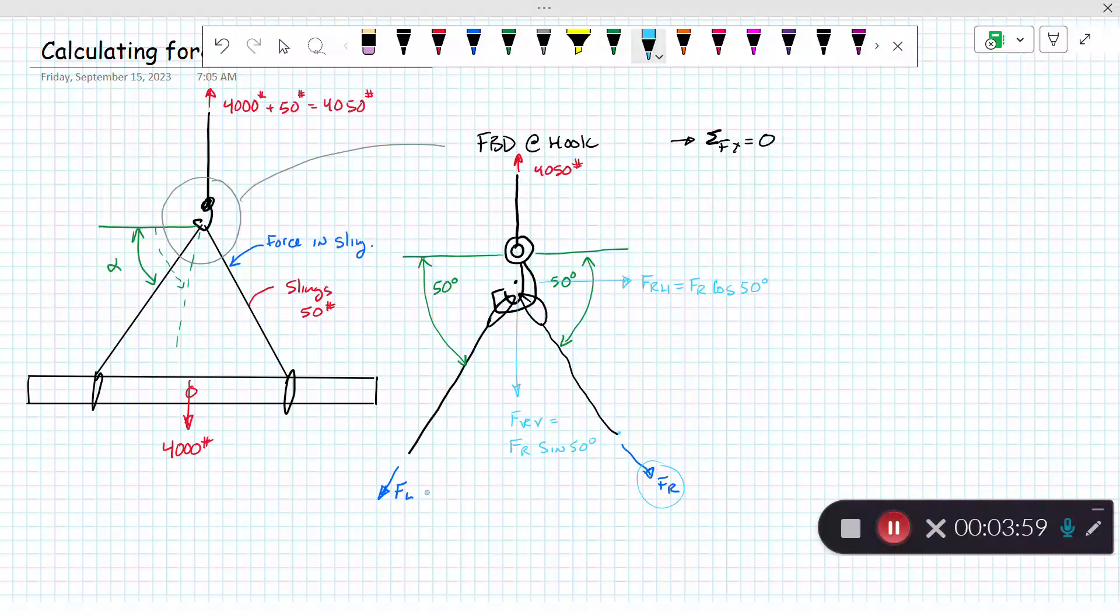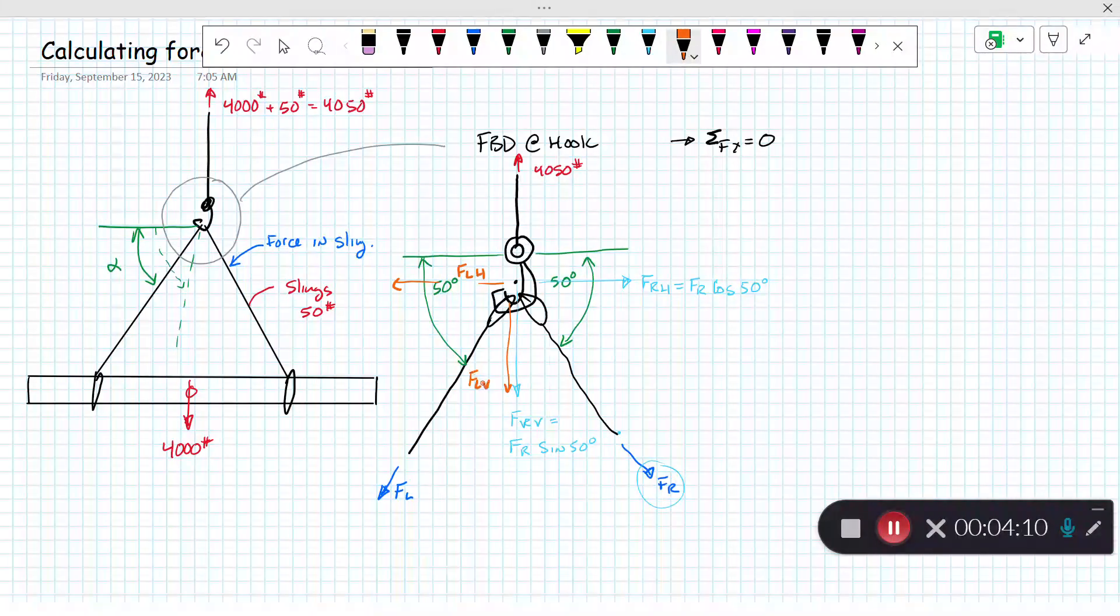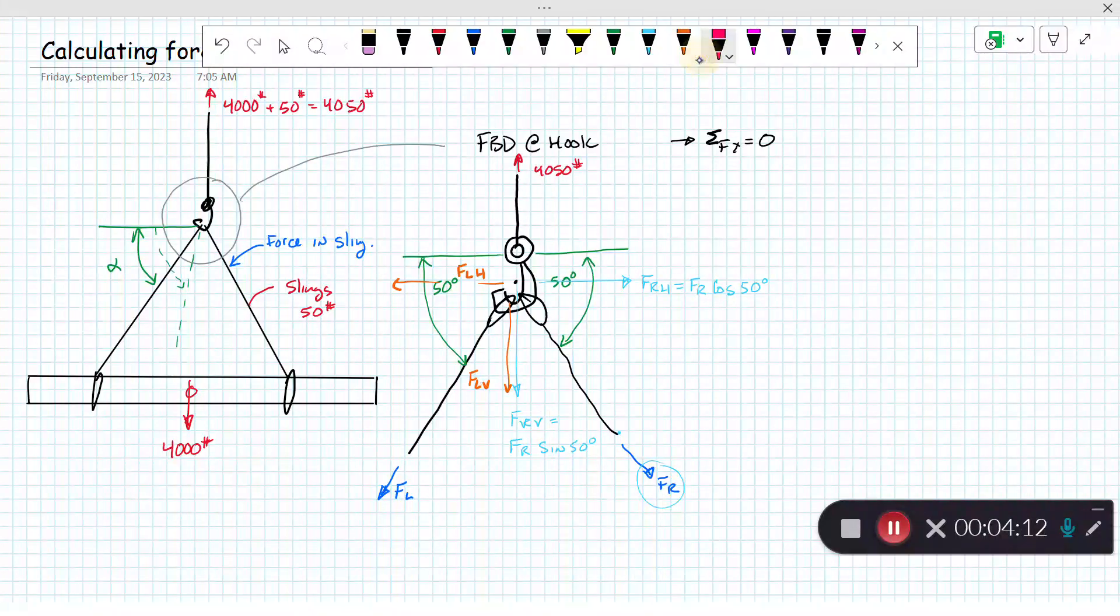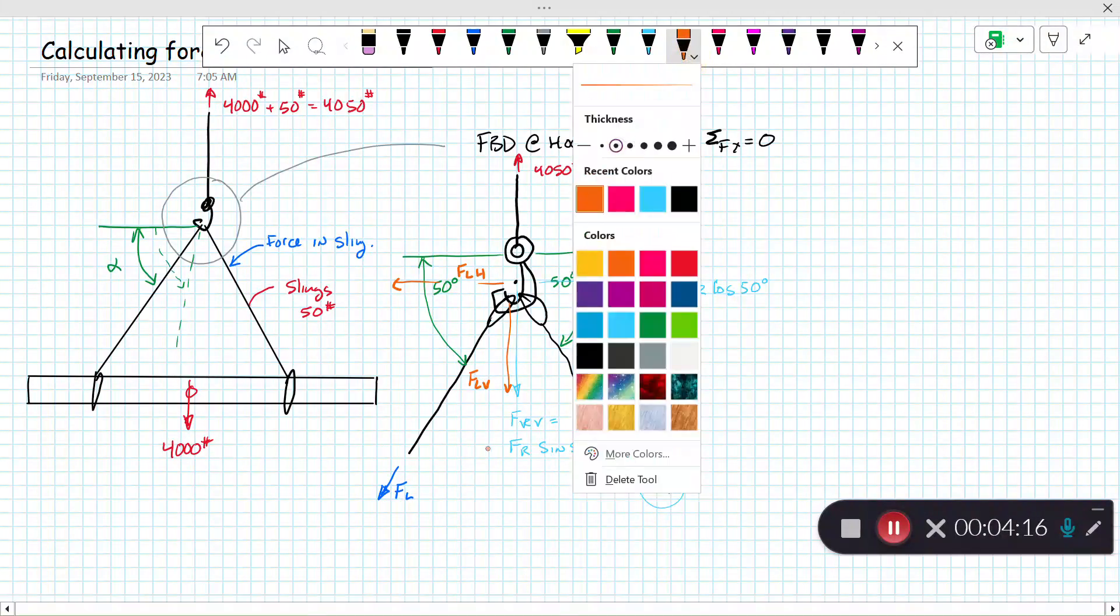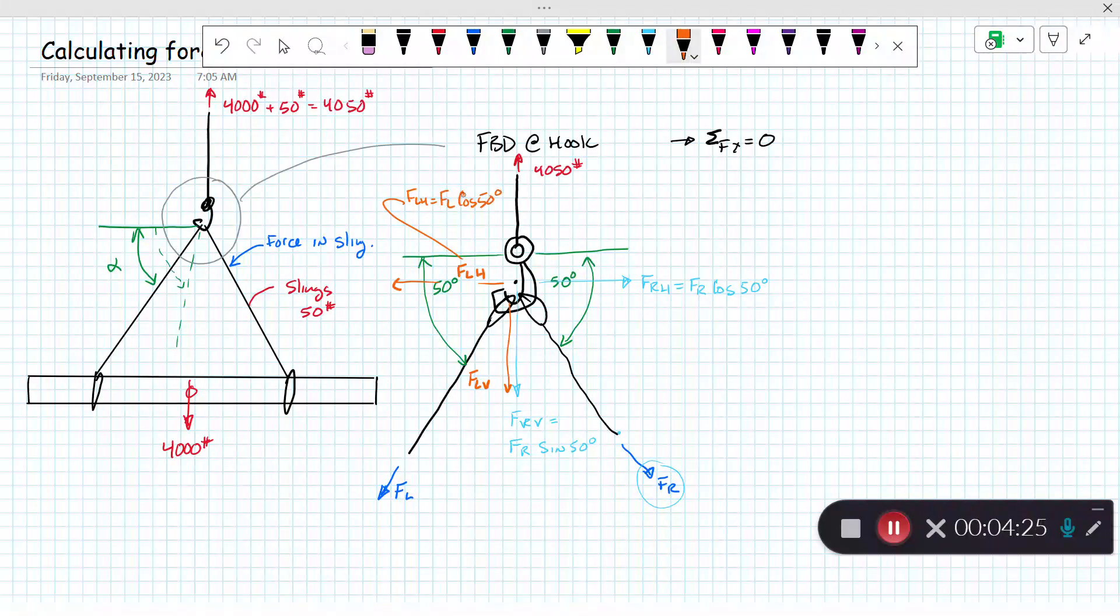Similarly, FL can be broken into two components, FLH and FLV. FLH will be FL cosine of 50 degrees, and FLV is FL sine of 50 degrees.